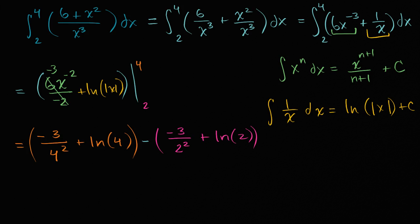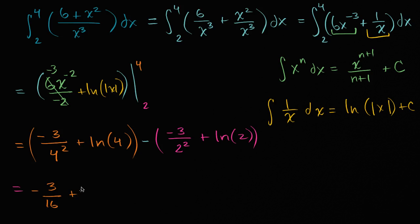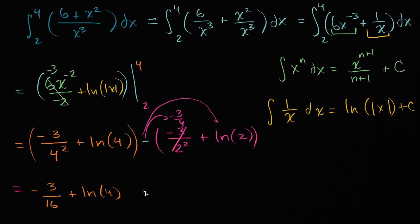Let's simplify. Negative three over four squared is negative three sixteenths, plus natural log of four. Then negative three over two squared is negative three fourths. Distributing the negative sign out front, negative of negative three fourths gives plus three fourths, and we subtract the natural log of two.